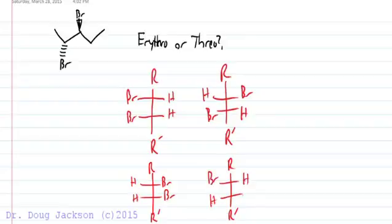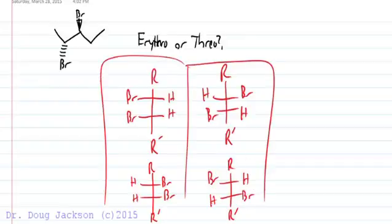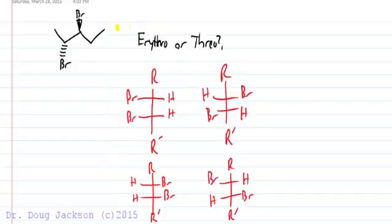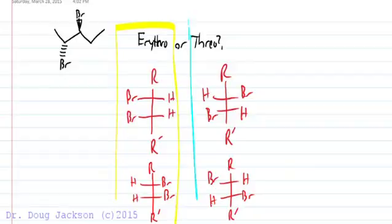These are enantiomer pairs. Both sets are enantiomer pairs with one another. Erythro is on the left, and threo—the two enantiomer threo isomers—are on the right.